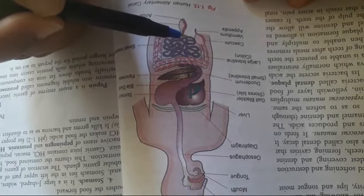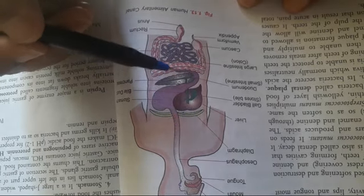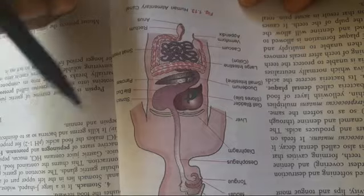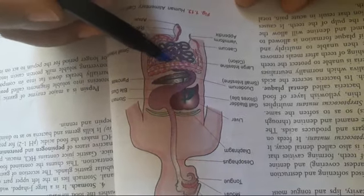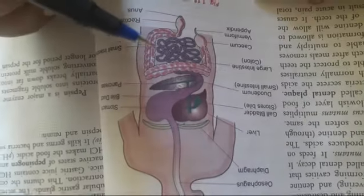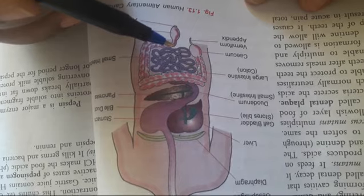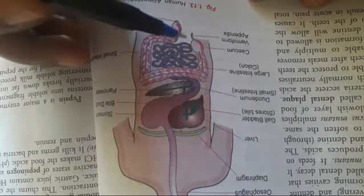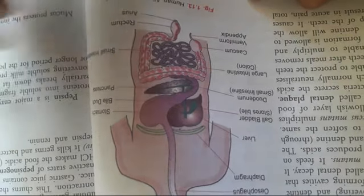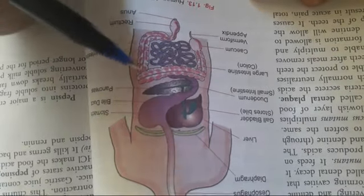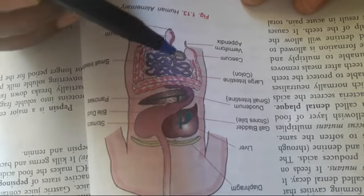The length of the small intestine varies in different animals. In carnivores, the small intestine is shorter because they feed on meat, whereas herbivores have a longer small intestine because they eat a lot of plant matter and have to digest cellulose. In human beings, the small intestine is around six meters long.